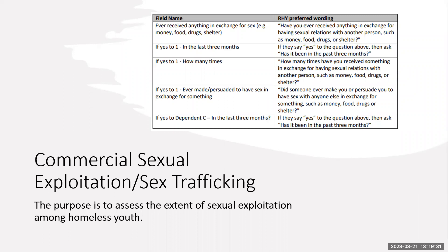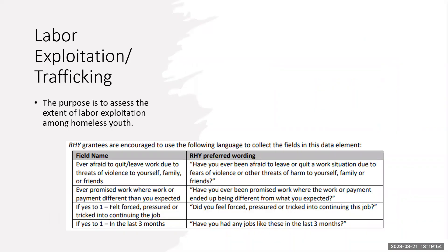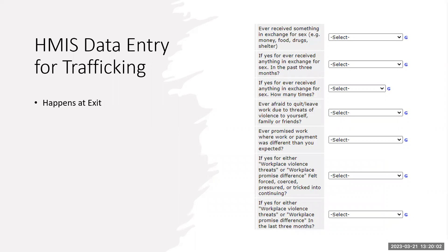Commercial sex exploitation and sex trafficking is a data element located in the exit information of the youth's time in your project. It's really looking to assess the extent of sexual exploitation among homeless youth within our system. Data collection questions include: Have you ever received something in exchange for sex, like money, food, drugs, or shelter? If yes, have you ever received anything in exchange for sex in the past three months? And if yes, have you ever received anything in exchange for sex — and how many times, including the number of months and number of times?